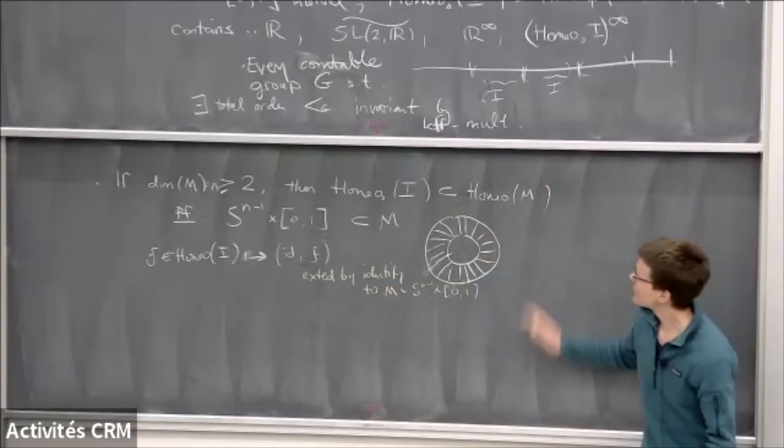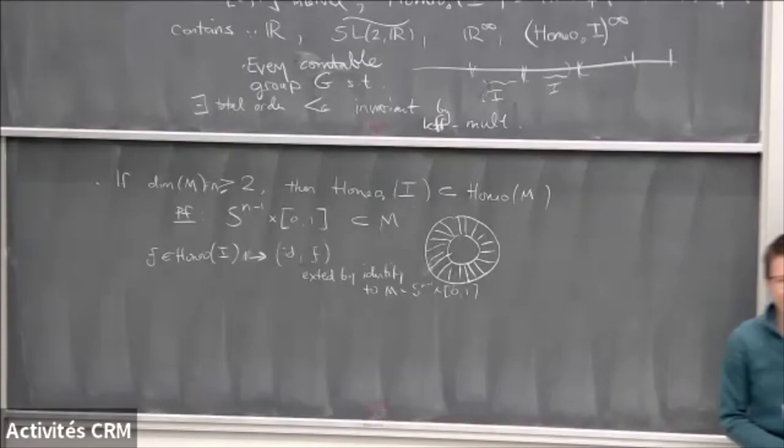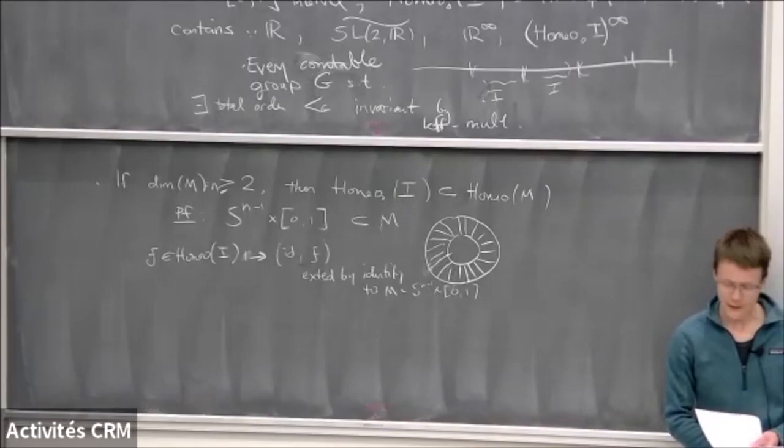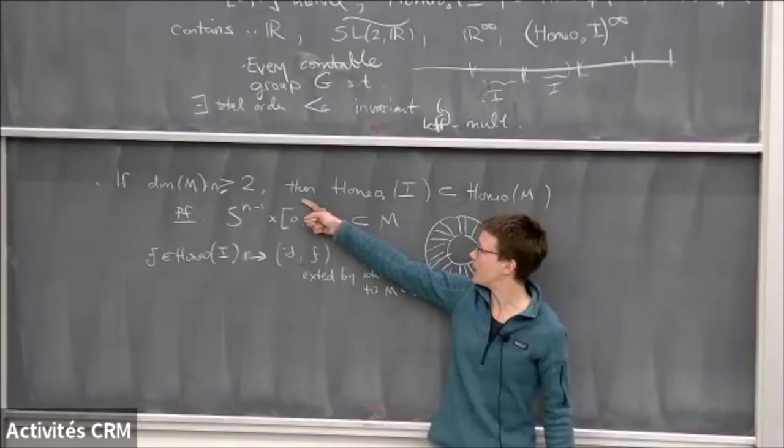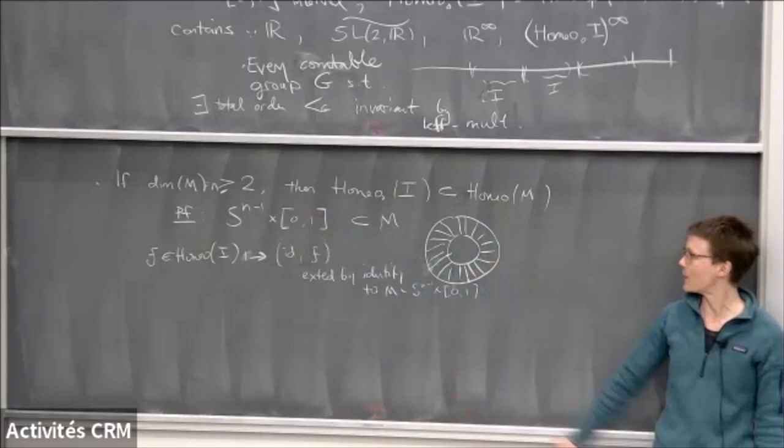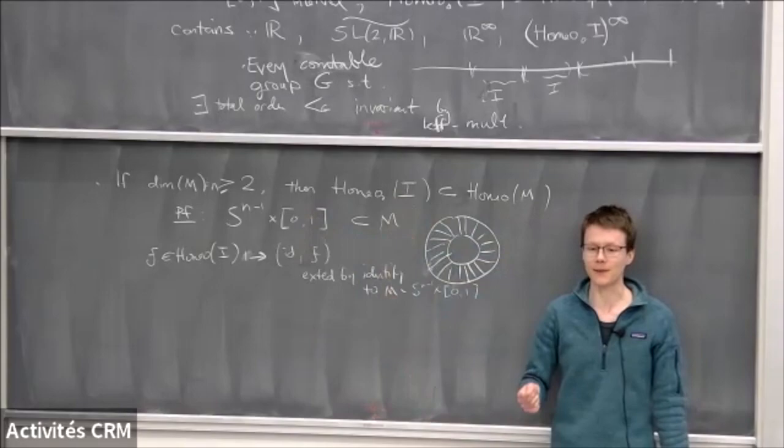So this is already bad. I have a group that contains something that looks much bigger than itself. So it must be huge. Another advertisement for hugeness was an open question that Sebastian mentioned that I like to reiterate, which is that as far as we know, once the dimension is at least two, it may be possible that every single torsion free finitely generated group embeds in the homeomorphism group of your manifold. I believe that this is false, but we don't know how to prove it.